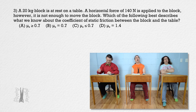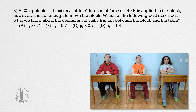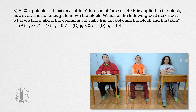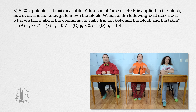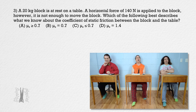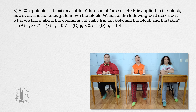Question 3: A 20-kilogram block is at rest on a table. A horizontal force of 140 newtons is applied to the block, but it is not enough to move the block. Which of the following best describes what we know about the coefficient of static friction between the block and the table? Choice A: mu_s ≥ 0.7. Choice B: mu_s = 0.7. Choice C: mu_s ≤ 0.7. Or choice D: mu_s = 1.4.